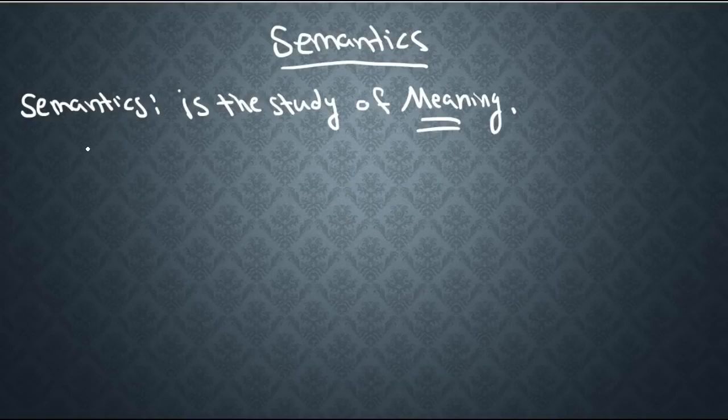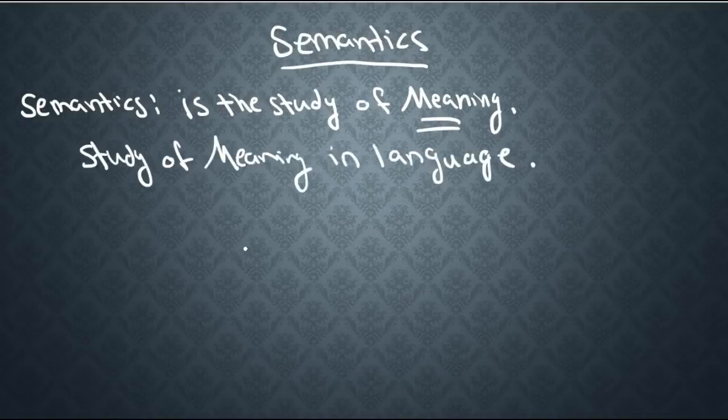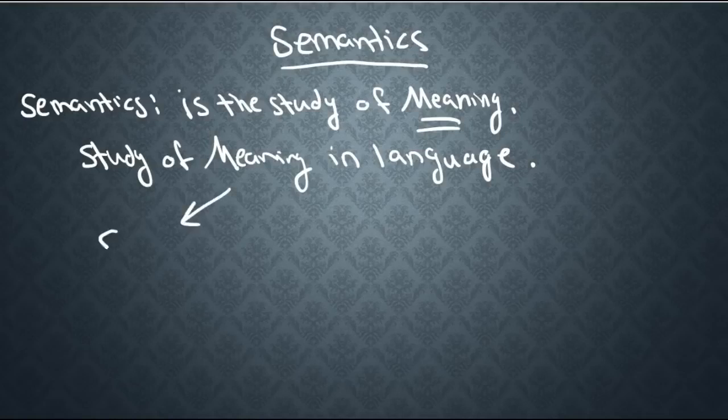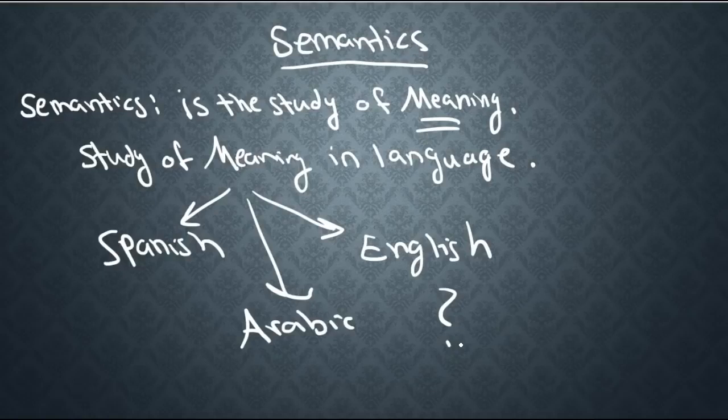So let's fix up our definition just a little bit. Semantics is a study of meaning in language, but we're still not done here. What type of language are we talking about? Are we actually studying meaning in Spanish, in English, in Arabic? Well, the fact of the matter is if we're gonna study meaning in each and every one of these languages individually, this is gonna take us forever and we probably won't come up with the generalizations that we're looking for.